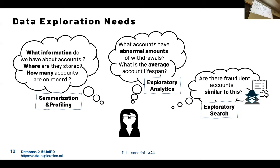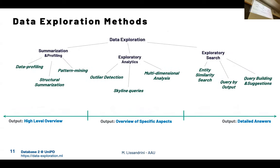In the middle, we have exploratory analytics — a middle ground between the two. On one side we want in-depth information about specific aspects, but we don't want to go down to the individual data point. We are trying to have some summary, some trends, or some outlier schemes. If we structure these three families — summarization and profiling, exploratory analytics, exploratory search — we can put them in a continuum. Profiling and summarization provides only a high-level overview. Exploratory search provides very detailed answers about specific requirements. Exploratory analytics is in the middle: an overview of specific aspects.